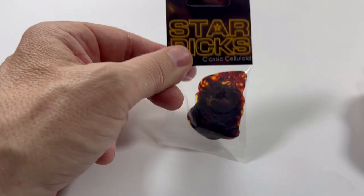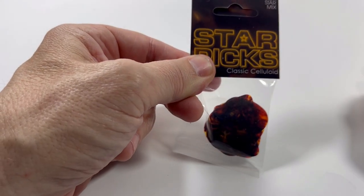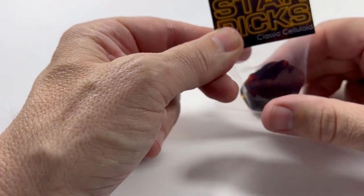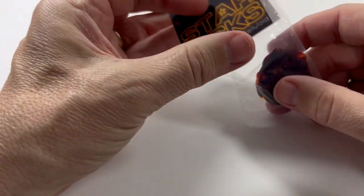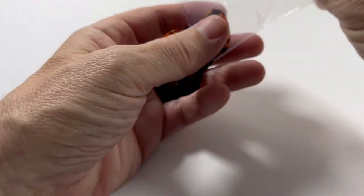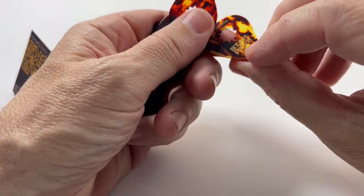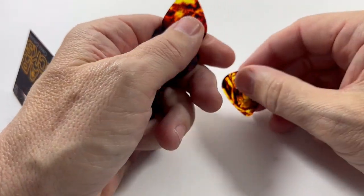Good afternoon folks, Jack here. Star picks, these are the celluloid kind. We do have other kinds like Tortex we'll do videos on later. This particular pack is a variety pack, so it features four picks each of 0.46 millimeter, which is a real thin one.